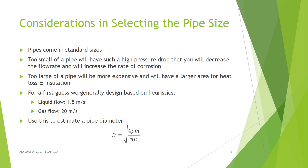What are the considerations you need to think about when selecting the proper pipe size? First, it's really important to know that pipes come in standard sizes — this is not something you're going to custom design. If you choose too small of a pipe, you're going to end up with high pressure drops, which will decrease your flow rate and also increase the rate of corrosion, which is particularly hazardous if you have dangerous chemicals in those pipes.